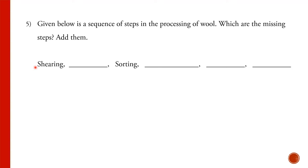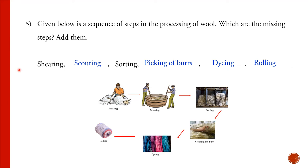Given below is a sequence of steps in the processing of wool — which are the missing steps? Shearing is given first, then a blank, then sorting, followed by three blanks. The steps in processing wool are: shearing, then scouring, then sorting, then picking off burrs, then dyeing, and finally rolling.